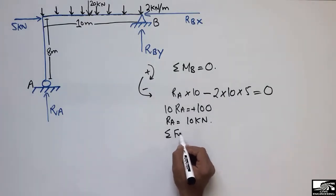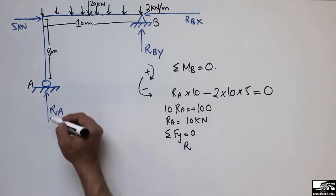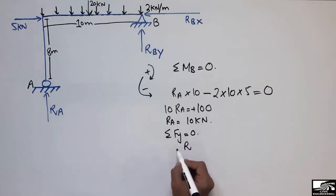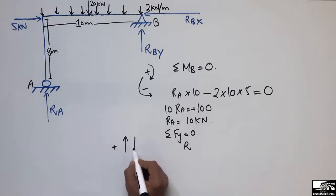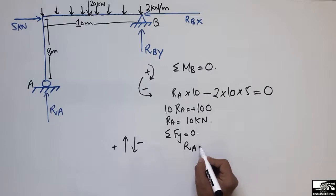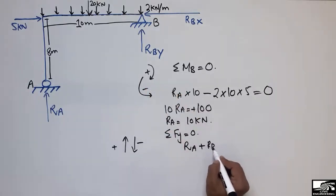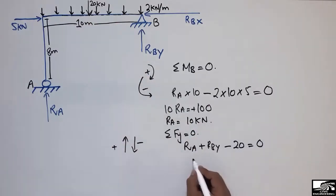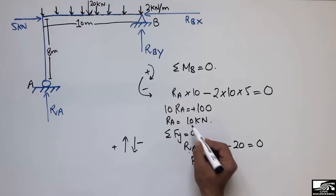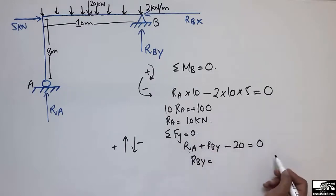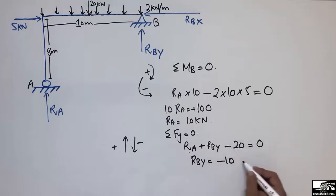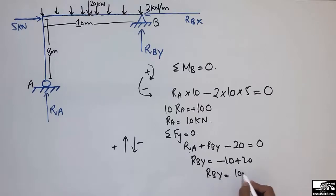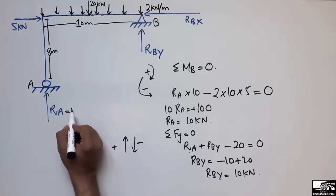Now applying summation of vertical forces equal to zero: RA is positive upward, RBY is also acting upward, and the distributed load of 20 kN acts downward. So RA + RBY − 20 = 0. Since RA = 10 kN, RBY = 20 − 10 = 10 kN. Both vertical support reactions are 10 kN each.